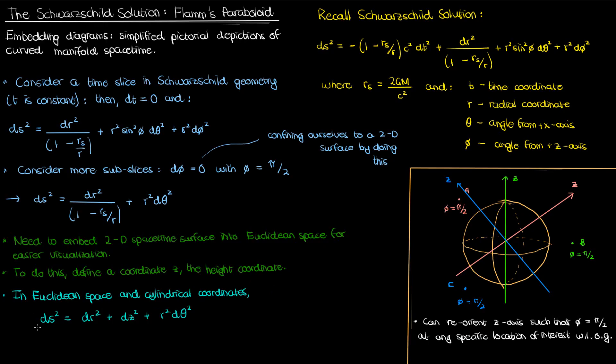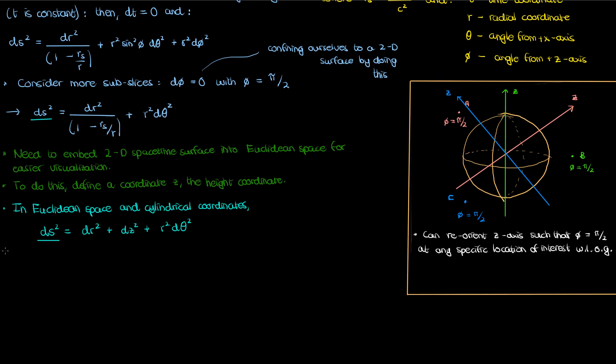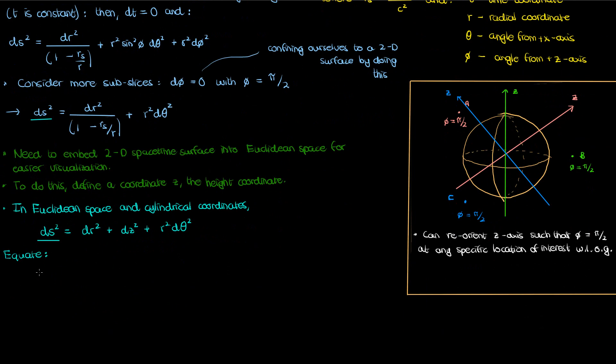Now if I want to draw the spacetime surface represented by my simplified Schwarzschild metric in Euclidean space, if I want to draw my embedding diagram, I need to equate the line element in cylindrical coordinates with the Schwarzschild line element. This will allow me to create a differential equation that'll give me z as a function of r and theta which I'll use to plot the surface corresponding to my embedding diagram.